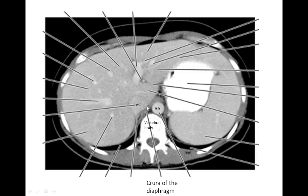We can't see the portal vein here because the portal vein has already branched and passed into the liver. So some of the vessels visible here may be hepatic veins — the branches of the portal vein are spread out amongst the liver.